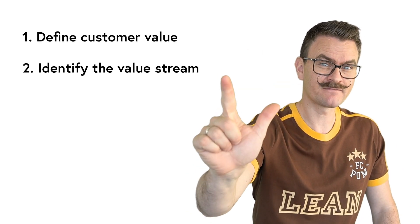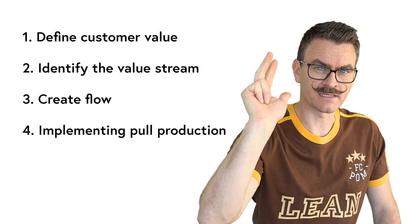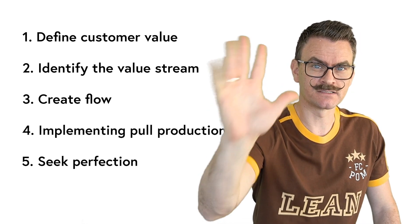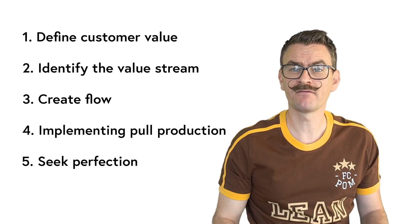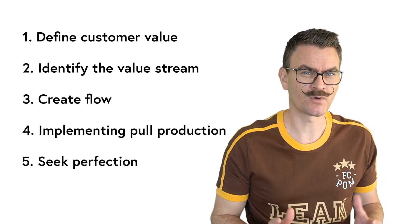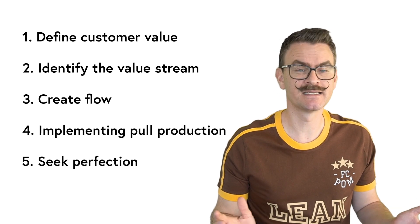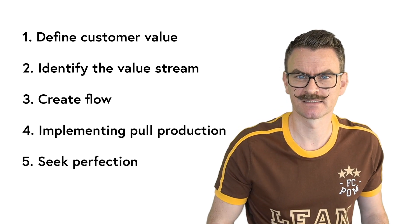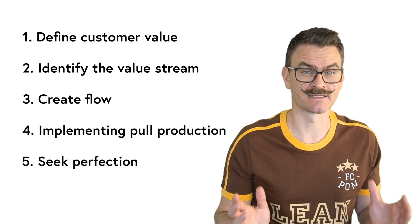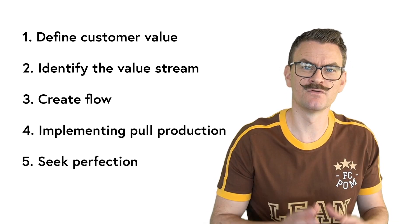The five lean principles are: define customer value, then identify the value stream, create flow by implementing pull production, and then finally continuously improve the processes. Note that the five lean principles focus on value-creating processes and much less on support processes such as leadership and culture building. They are also too high level to be of use in most settings. Therefore, I'm not suggesting that the five lean principles represent a universally valid account of lean, but they are probably the most used operationalization of lean.